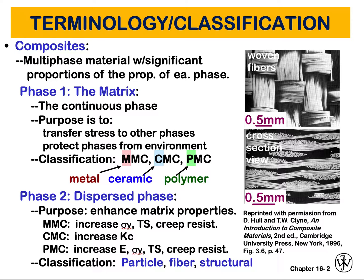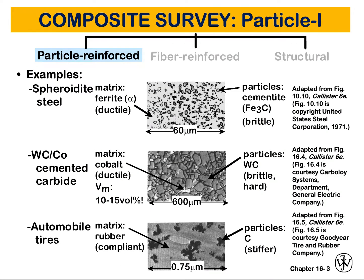There is a fourth classification — nano composites — but we are not going to talk about that. Taking the first one, particle reinforced composites, we actually have two sub-classifications: large particle composites and dispersion strengthened composites.